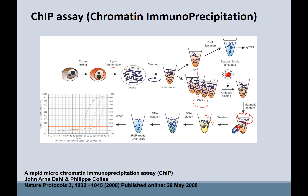Eventually, you have to undo the crosslink — dissociate the DNA from the proteins and from the antibodies. Then you can do PCR.